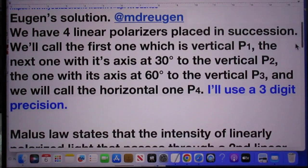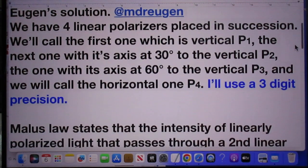He follows Eugen's solution. We have four linear polarizers placed in succession. We'll call the first one, which is vertical, P1. The next one with its axis at 30 degrees to the vertical, we call that P2.